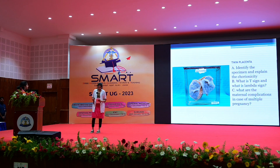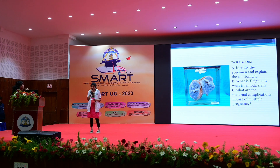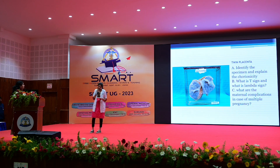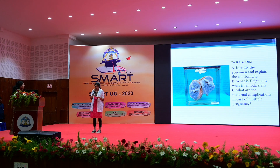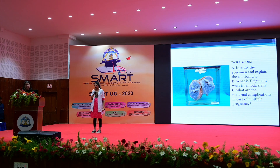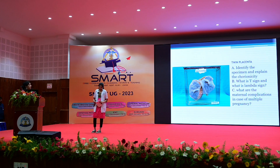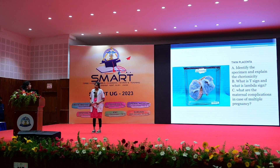What are the maternal complications in case of multiple pregnancy? There are antepartum and intrapartum complications. Antepartum: miscarriage, hyperemesis gravidarum, polyhydramnios, anemia, preeclampsia, and pressure symptoms. Intrapartum: dysfunctional labor, malpresentation, cord prolapse, and placenta previa. In case of higher-order multiple pregnancy, everything is exaggerated — cardiac output changes, decreased plasma volume — and there will be more complications like preeclampsia and eclampsia. So good management is required.